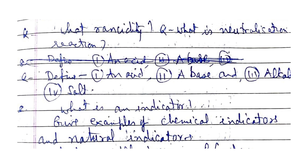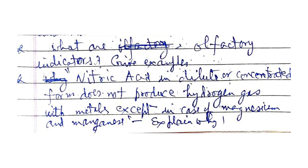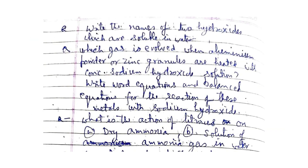How is rusting of iron prevented? Give two methods. What is rancidity? What is a neutralization reaction? Define an acid, a base, and an alkali, and salt. What is an indicator? Give examples of chemical indicators and natural indicators. What are olfactory indicators? Give examples. Nitric acid in dilute or concentrated form does not produce hydrogen gas with metals except magnesium and manganese — explain why.